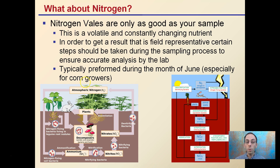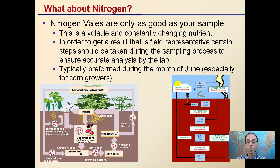Nitrogen is a little bit of a weird one. These values are only as good as your sample, meaning it's a volatile nutrient — it's constantly changing. In order to get results that are field representative, certain steps should be taken during the sampling process to ensure accuracy. Typically this is performed during the month of June, especially for corn growers. It's called a June nitrate test.